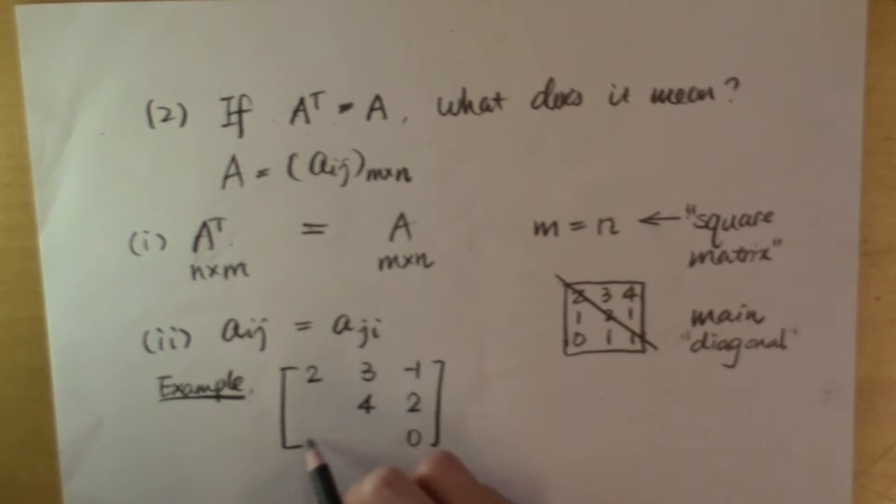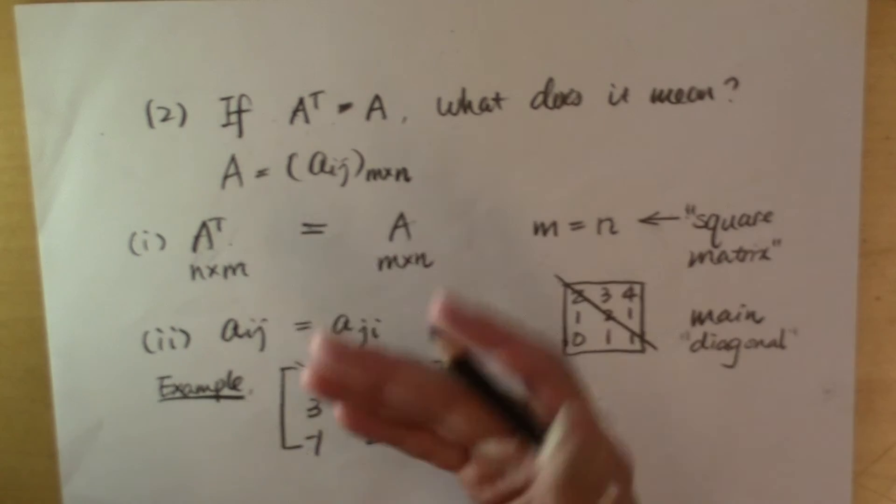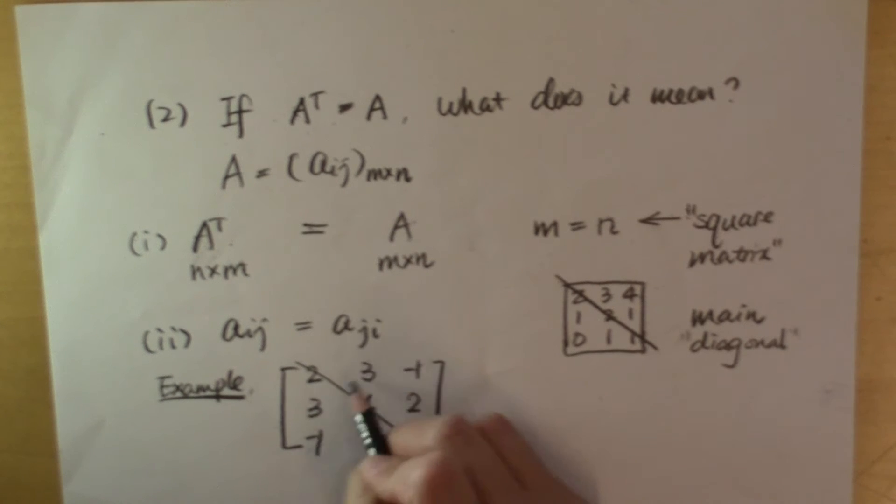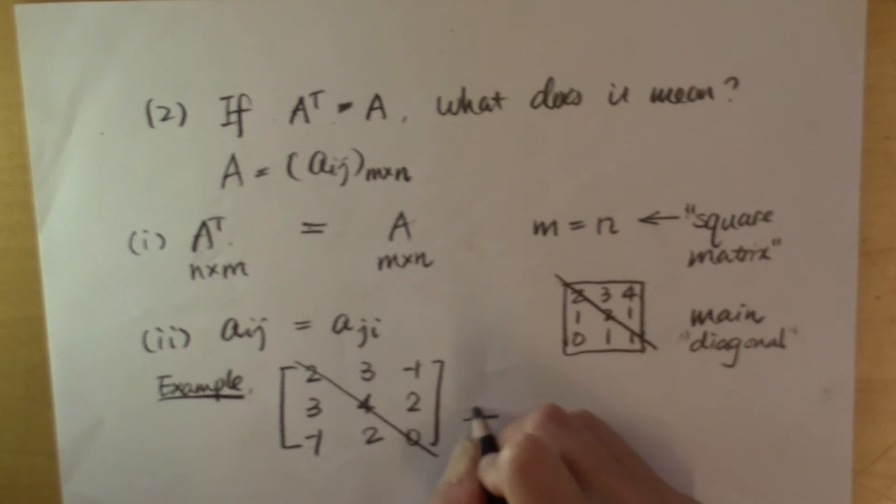If this is satisfied, then the entry on the first column in the second row is going to be equal to its reflection with respect to the main diagonal, which is 3. And this entry on the first column in the third row is going to be equal to the entry on the third column in the first row, which is negative 1. If a square matrix satisfies this condition, we call it a symmetric matrix.